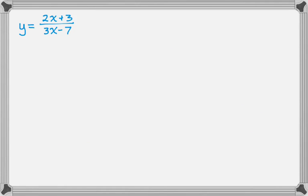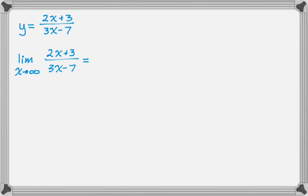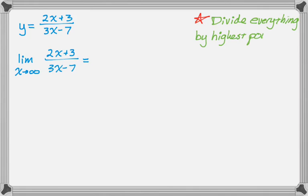The reason we need to know that is so we can find horizontal asymptotes. You may already have memorized a bunch of rules, but where do those rules come from? I'm going to take this function and find the limit as x approaches infinity of (2x + 3) over (3x − 7). The way you calculate this limit is you look for the biggest power of x in the denominator — that's x to the first. In general, we find the highest power of x in the denominator and divide everything we see by that highest power.